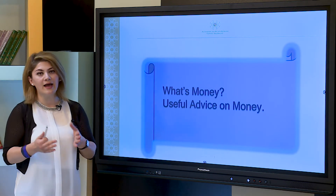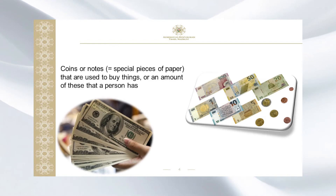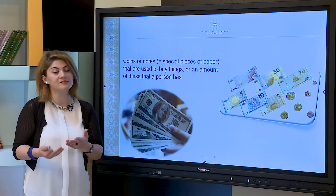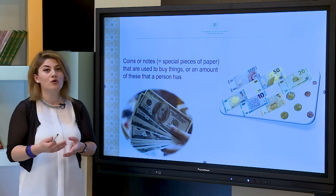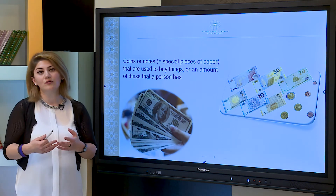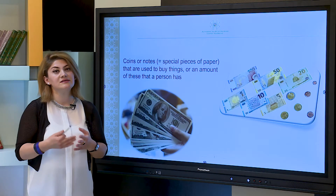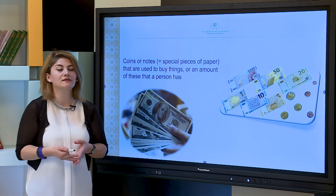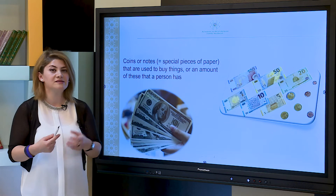Now our term: what's money? Money is coins or special pieces of paper that are used to buy things, or an amount of these that a person has. Of course, money is a thing that helps us to buy something we need or want. Everyone can earn money — even if you are a child, your parents may pay you money for doing house chores or doing something for them. And if you have money, you can save it in the bank, or pay bills, or spend it at the market or shopping center.